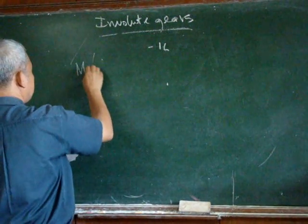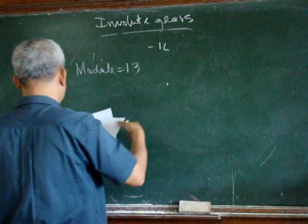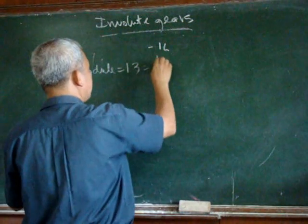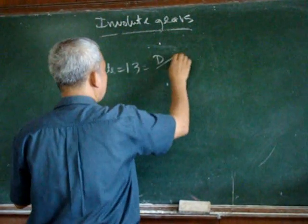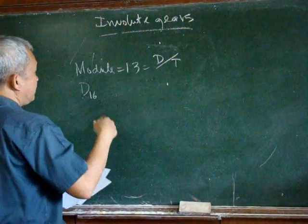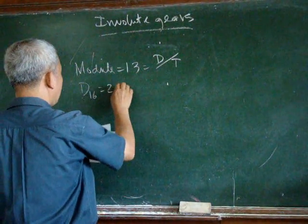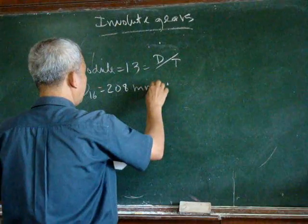The module is equal to 13. So with that, it is equal to the module times the number of teeth. And that gives us the diameter of the pinion, equal to 208 mm.